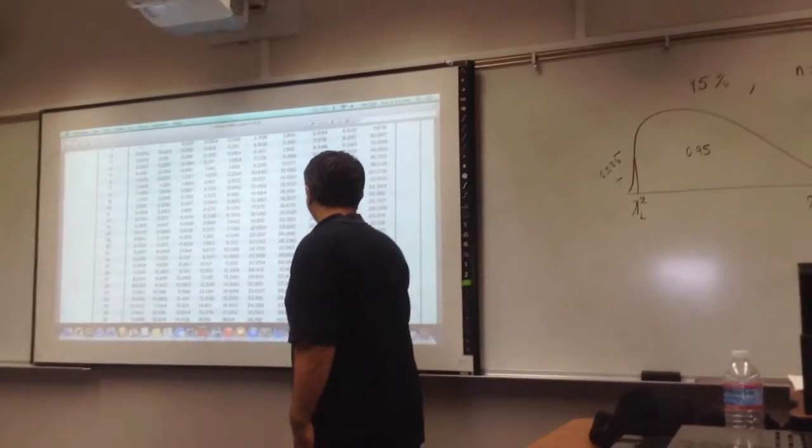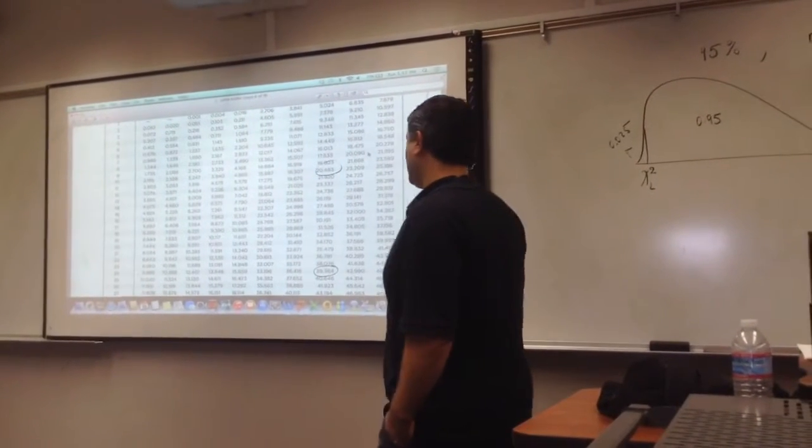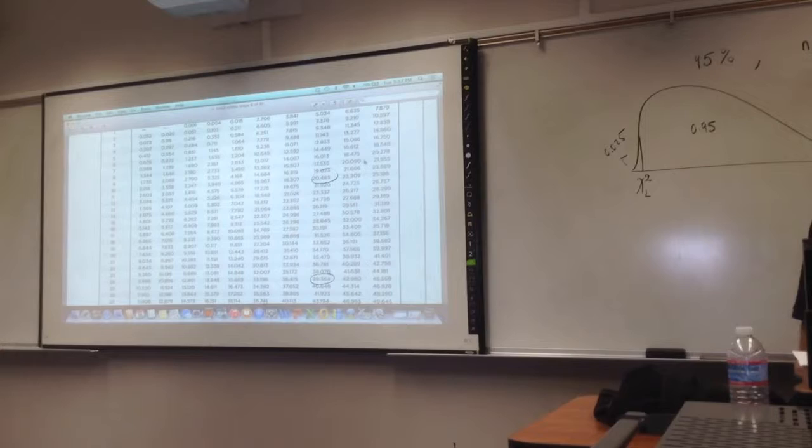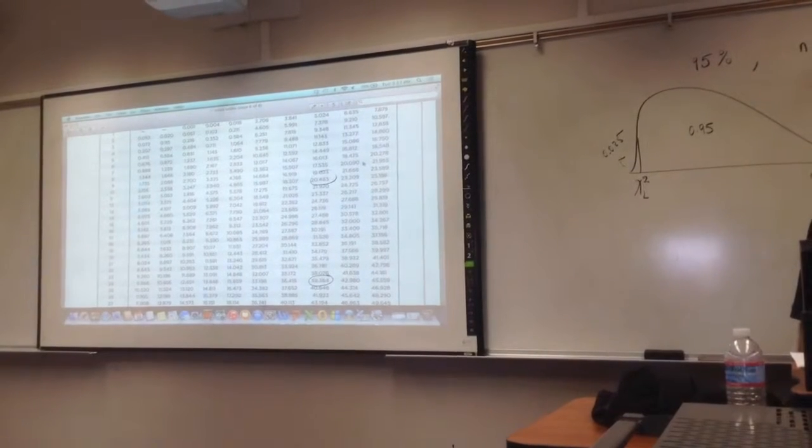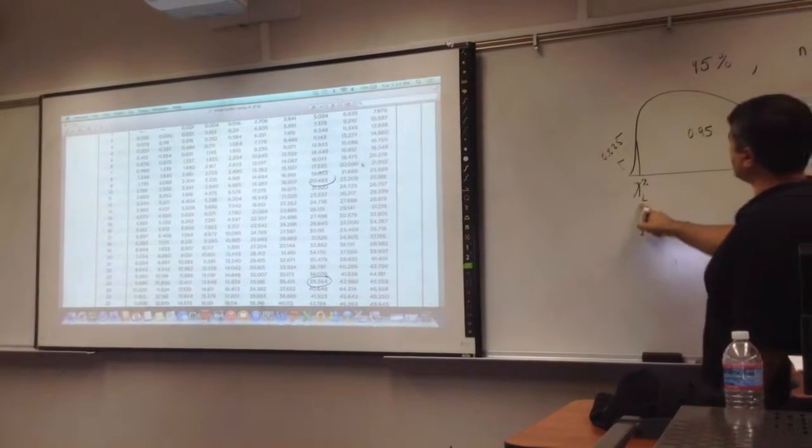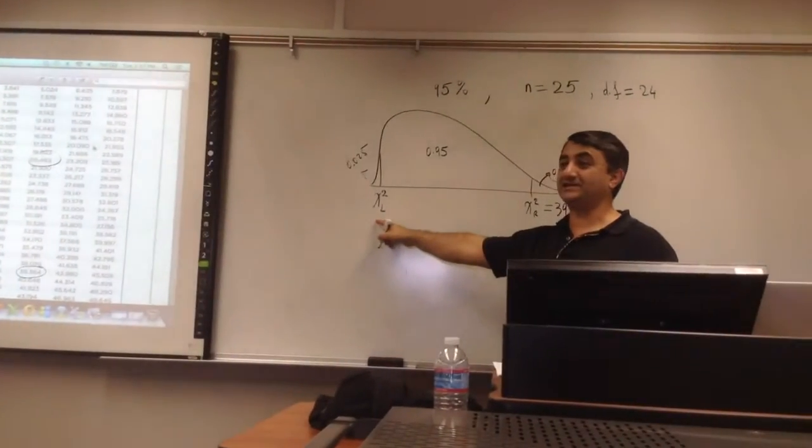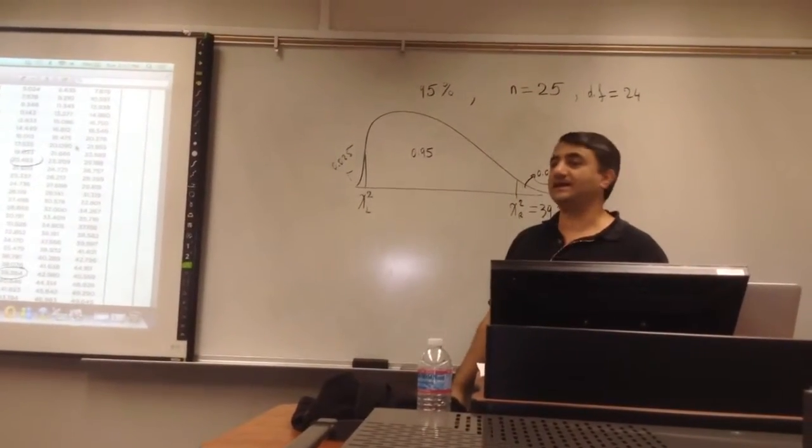Chi-square right, the .025, so we read here 39.364. If I want to find chi-square left, it is not symmetric. You cannot simply say that's a negative because there is no negative, right?